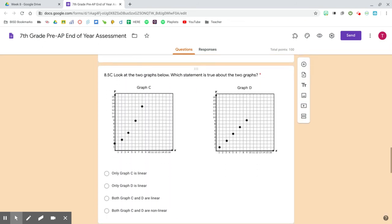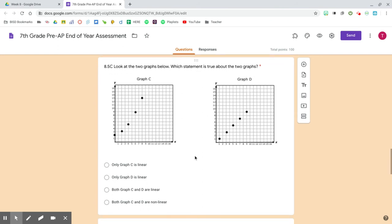Question 5. Look at the two graphs below. Which statement is true about the two graphs? Only graph C is linear. Only graph D is linear. Both graph C and D are linear. Both graph C and D are nonlinear.